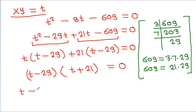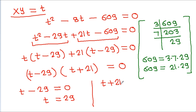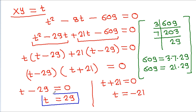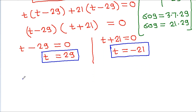Factoring: t(t minus 29) plus 21(t minus 29) equals 0, so (t + 21)(t minus 29) equals 0. Therefore t equals 29 or t equals minus 21. Since t equals xy, we get xy equals 29 or xy equals minus 21.